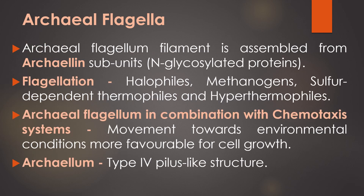The Archaeal flagellum filament is assembled from archaellin subunits which are N-glycosylated proteins. Flagellation occurs in all the main groups of Archaea, which includes halophiles, methanogens, sulfur-dependent thermophiles, and hyperthermophiles. Archaea use the motility apparatus — that is, the Archaeal flagellum — in combination with the chemotaxis system to bias their direction of movement towards environmental conditions more favorable for cell growth. The archaellin is considered to be a type 4 pilus-like structure.